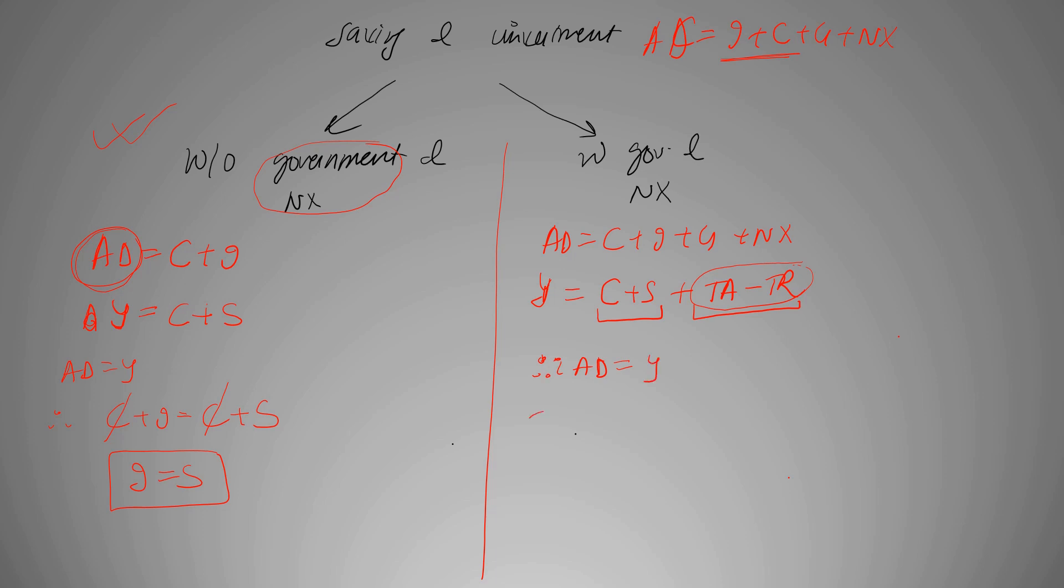Again, since AD is equal to Y, we have C plus I plus G plus NX is equal to C plus S plus TA minus TR.